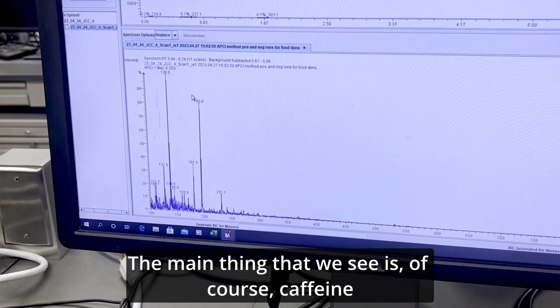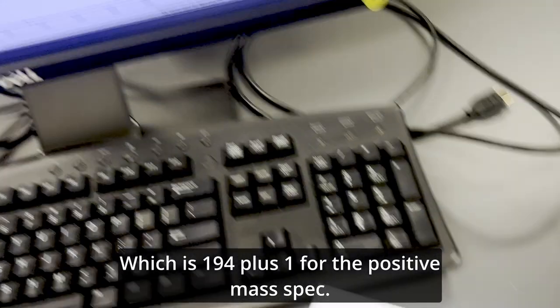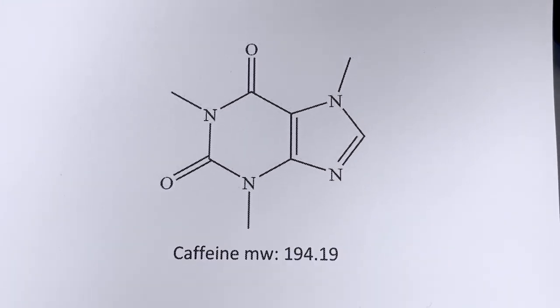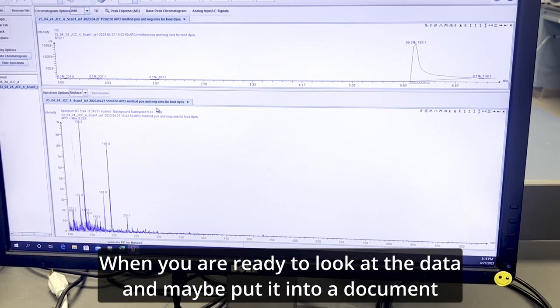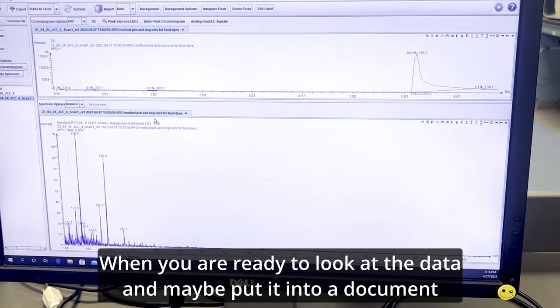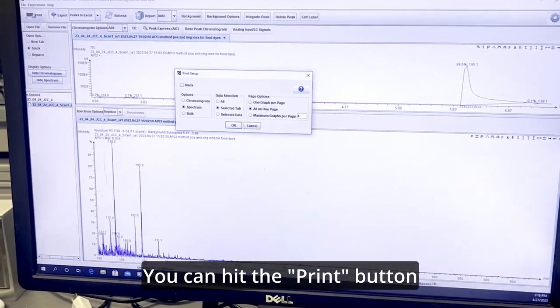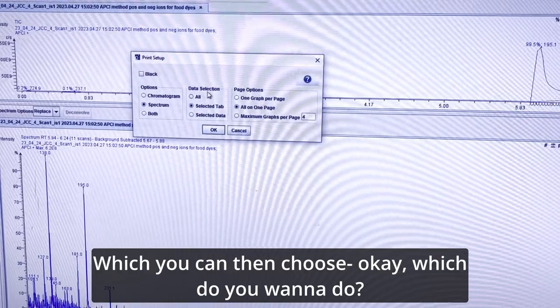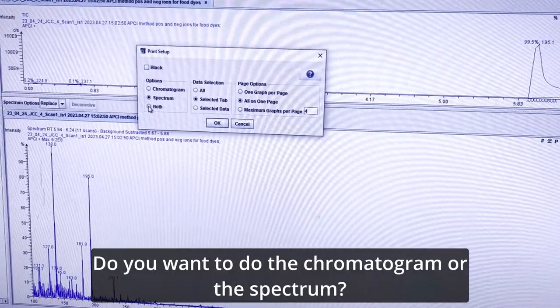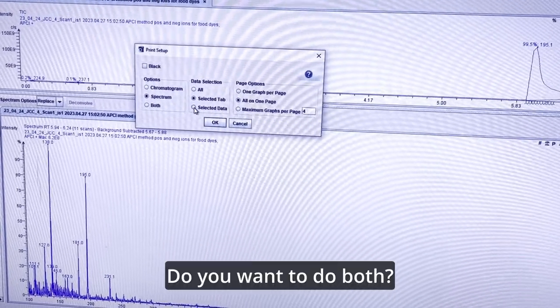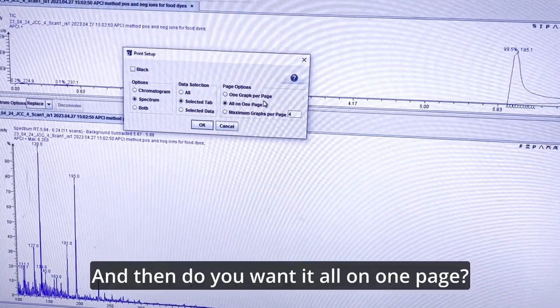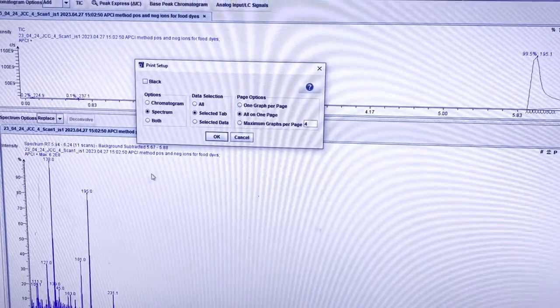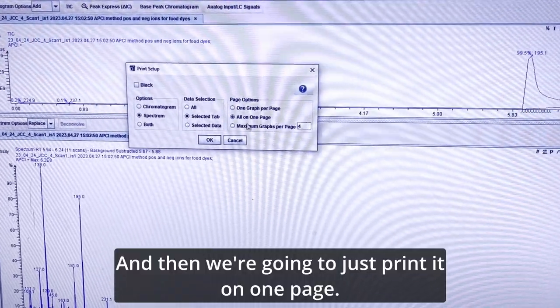So down here, we see what's in the peak. The main thing that we see is of course caffeine, which is 194 plus one for the positive mass spec. When you are ready to look at the data and maybe put it into a document, you can hit the print button, which you can then choose, okay, which do you want to do? Do you want to do your selected tab? Do you want to do the chromatogram or the spectrum? Do you want to do both? And then do you want it all on the page? So we're going to put it on the mass spectra and then we're going to just print it on one page.